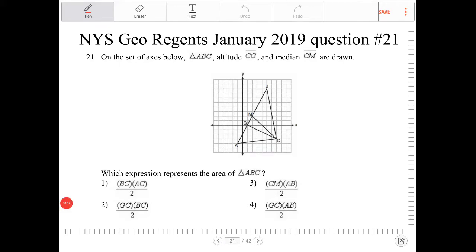On the set of axes below triangle ABC, altitude CG, and median CM are drawn. Which expression represents the area of triangle ABC?